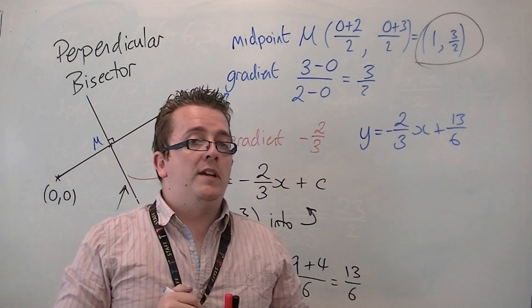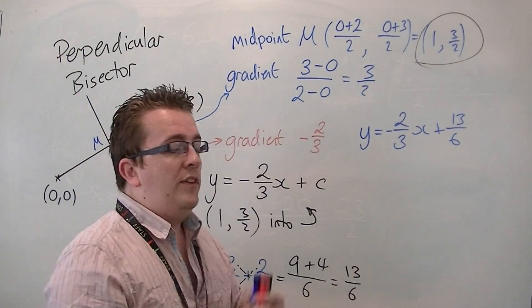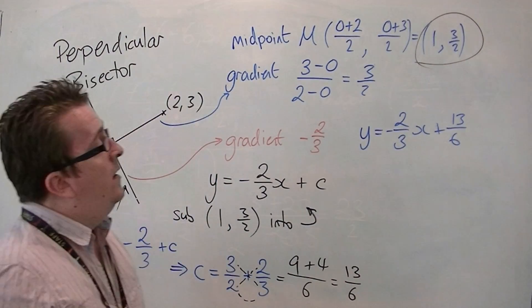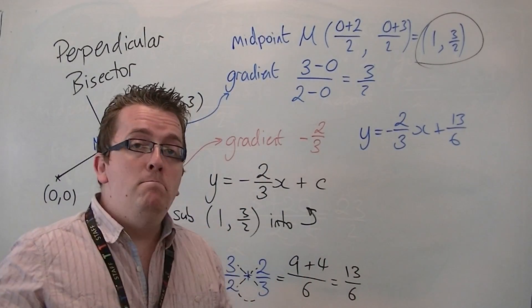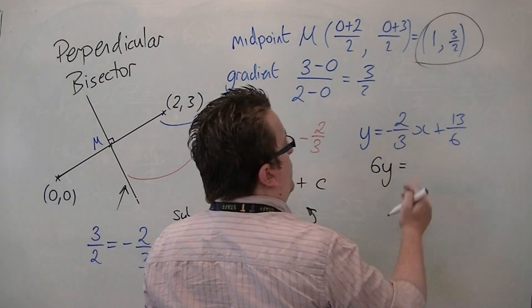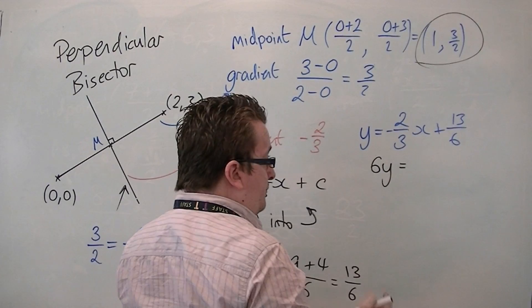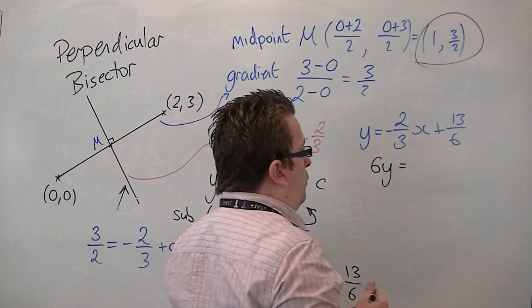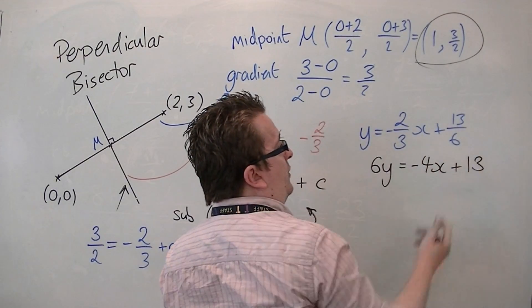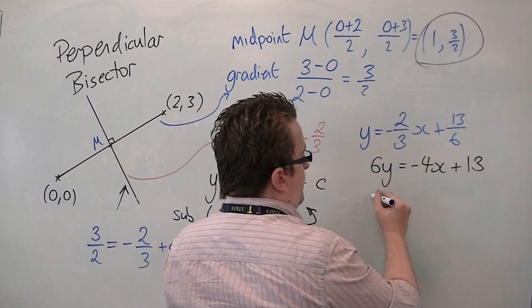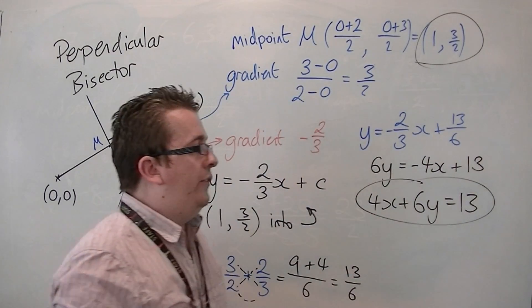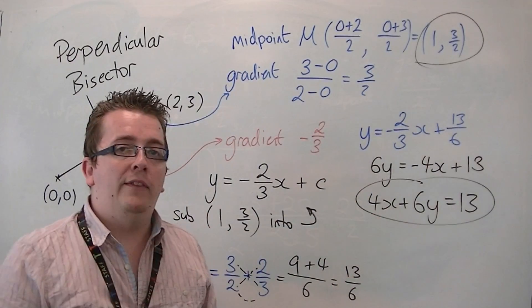Now, in a lot of cases, you might be asked to put this into a particular format. There's a previous video that looks into how you can rearrange an equation like that. It's not in a particularly nice format. So, if I multiply everything by 6, I can get 6y is equal to minus 4x plus 13. Then you can add 4x to both sides, and you can get it into this format,